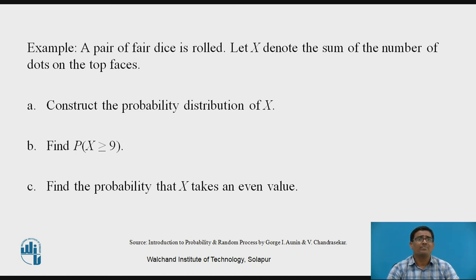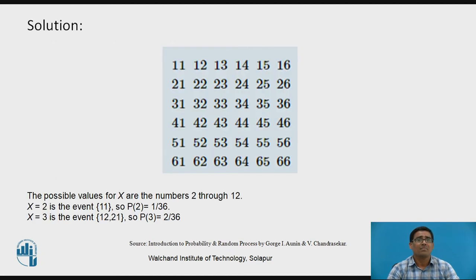Problem on discrete random variable: A pair of fair dice is rolled. Let X denote the sum of the number of dots on the top faces. We need to: (1) construct the probability distribution of X, (2) find P(X ≥ 9), and (3) find the probability that X takes an even value. We observe the possible outcomes of this experiment.